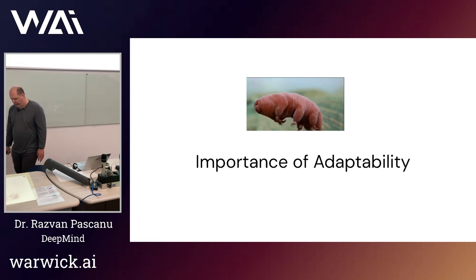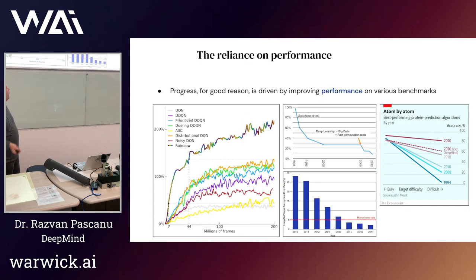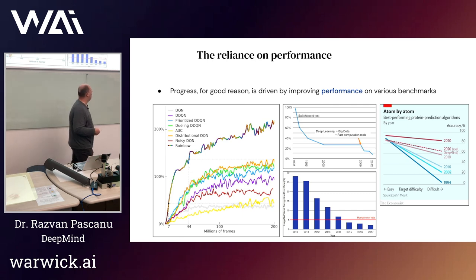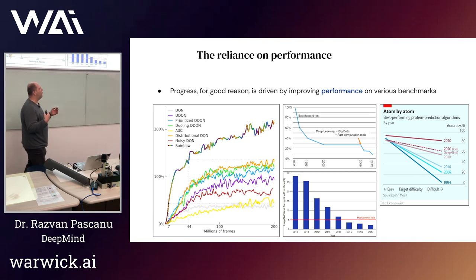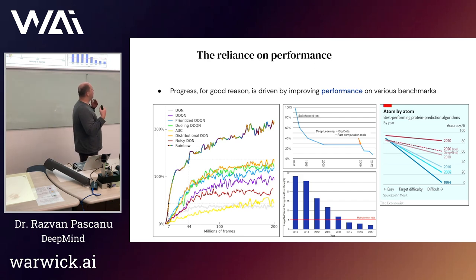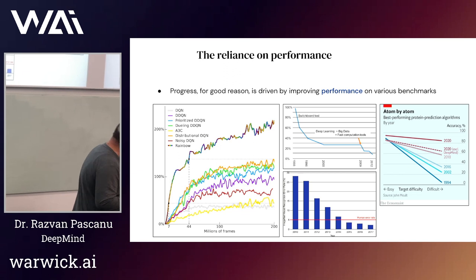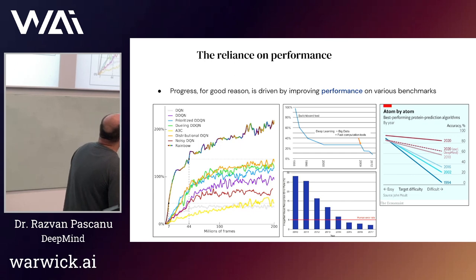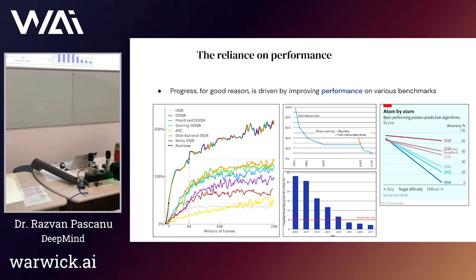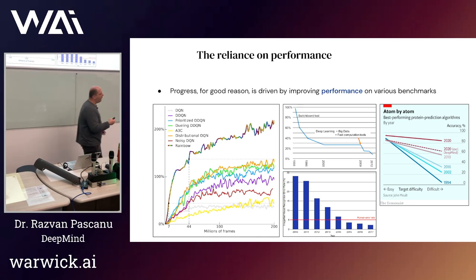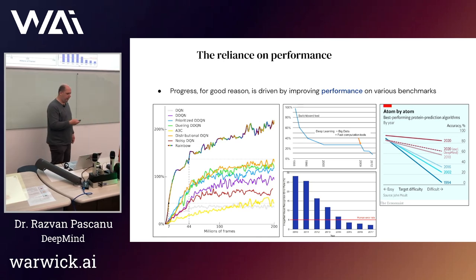The first thing I wanted to talk about was adaptability. In deep learning, for a long time, we've been used to staring at graphs that look at the performance of a system — things like performance on speech from MSR, or performance on ImageNet over the years. The only number that we seem to optimize is performance.